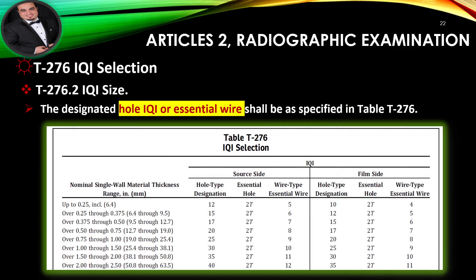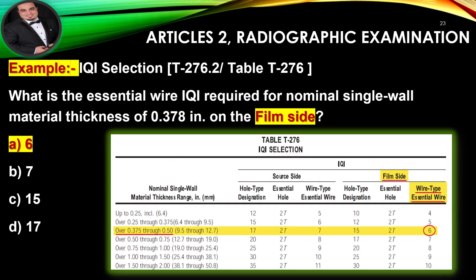IQI Selection: The designated hole IQI or essential wire shall be as specified in Table T-276. This table is used to determine the specific wire or hole that must be shown on the radiograph film, based on the nominal single wall material thickness and IQI placement — source side or film side. If the specific wire or hole is not shown on the radiograph film, it shall be considered unacceptable. Example: The essential wire IQI required for a nominal single wall material thickness of 0.378 inches on the film side — answer is A.